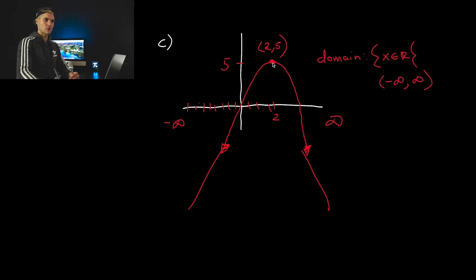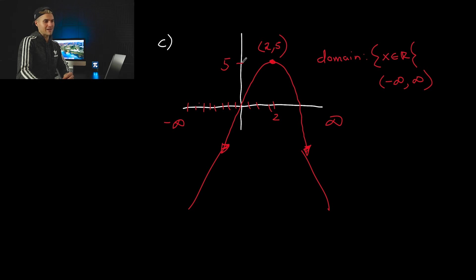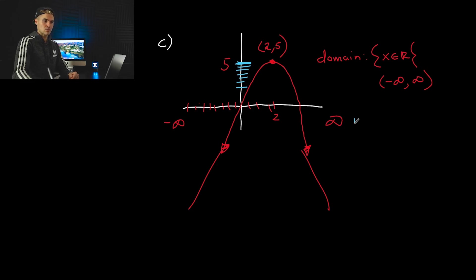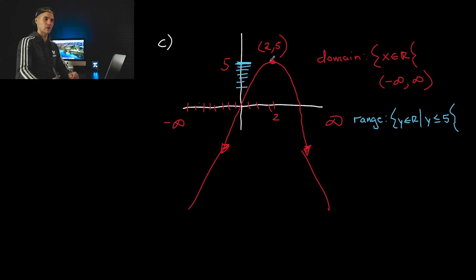The range depends on the vertex location and whether the quadratic opens up or down. The maximum Y value is 5, and there are no Y values above that since it opens downward. If it opened upward, it would be all Y values above 5 including 5. So here it's all Y values below and including 5: Y ∈ ℝ such that Y ≤ 5. The range is affected by the Y value of the vertex and the direction it opens.